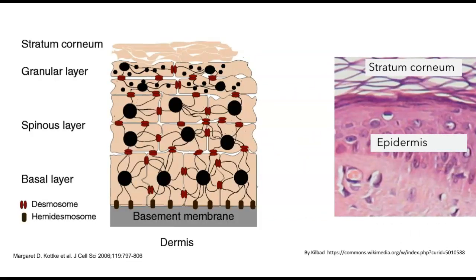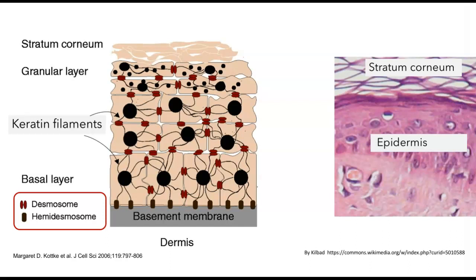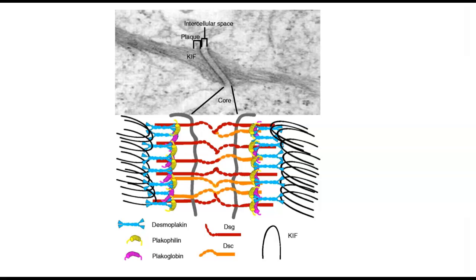Here is a cartoon version of the epidermis showing its several different cell layers. Each one of those cells has many keratin filaments, and they're linking the cells to one another and also to the basement membrane — a form of extracellular matrix — using structures called desmosomes and hemidesmosomes. It's possible to use electron microscopy to visualize what a single desmosome looks like.